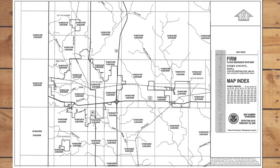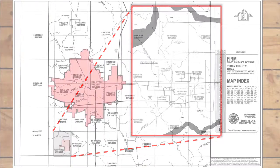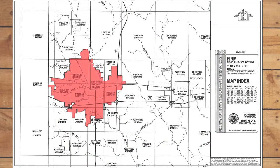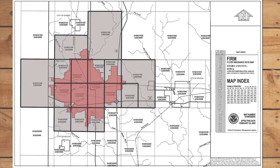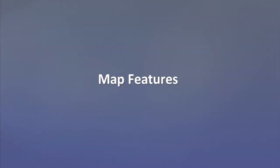A community's FIRM may consist of one or more map panels. For smaller communities and those with few flood-prone areas, the entire special flood hazard area might be shown on a single FIRM panel. In order to provide maps at a readable scale, FEMA often divides the geographic area of larger communities onto two or more map panels, each having a unique panel number. The following map features help a reader locate the correct map or map panel.